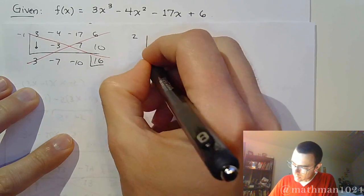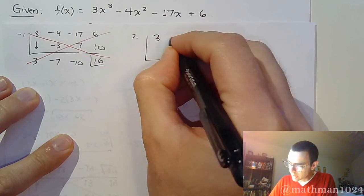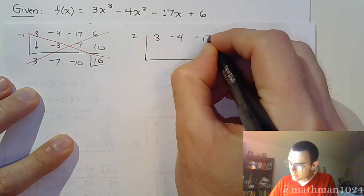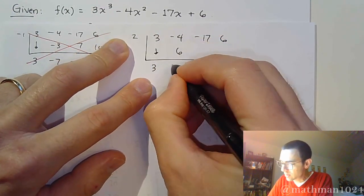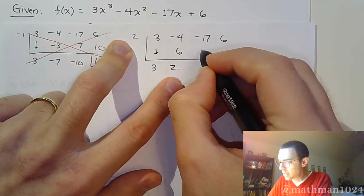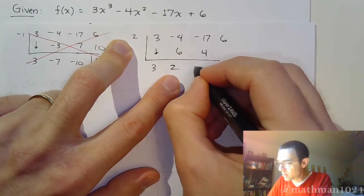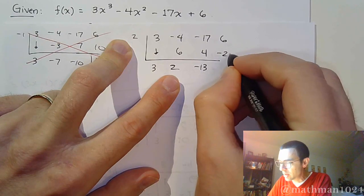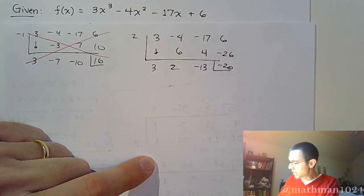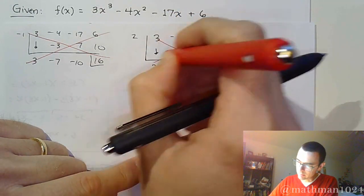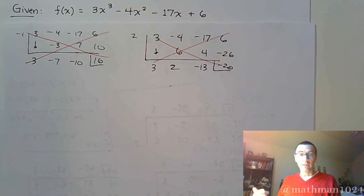All right. So, let's try 2. Same numbers. Bring down the 3, so that gives me 6, which is positive 2. Multiply, so that gives me 4. That gives me negative... I don't like the way this is going. I get negative 20. That guy does not work out. Let's try negative 2.